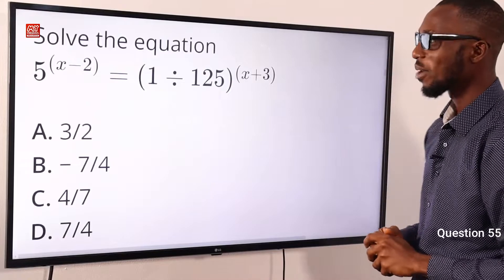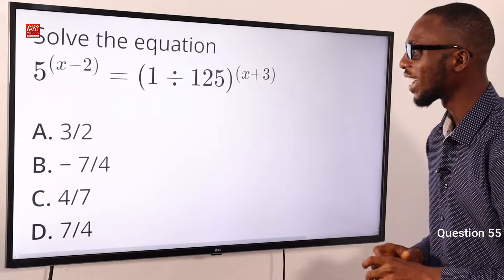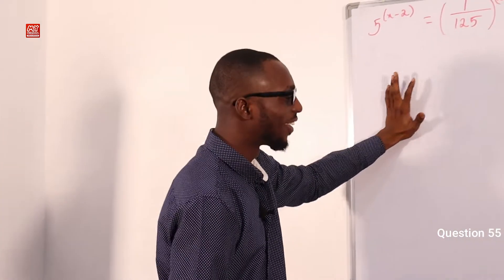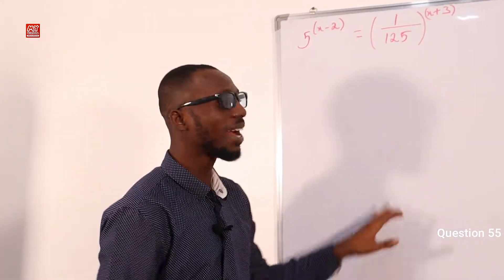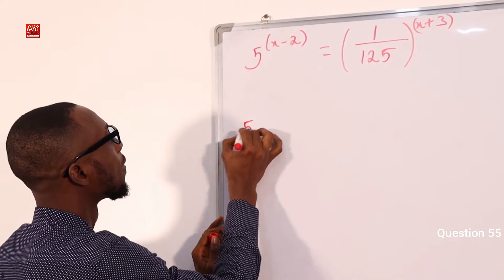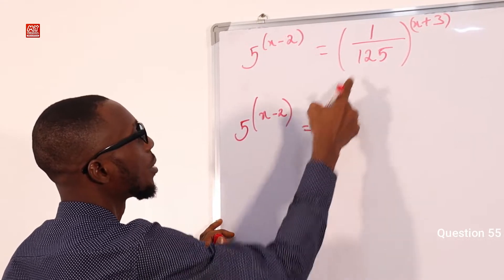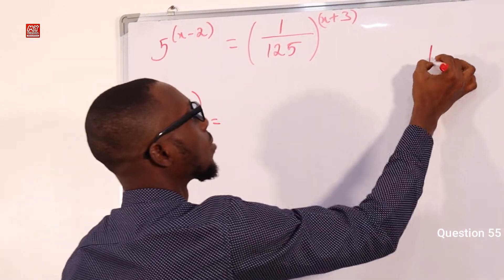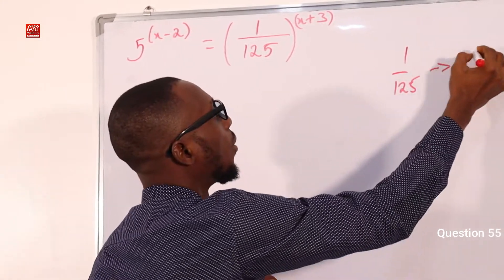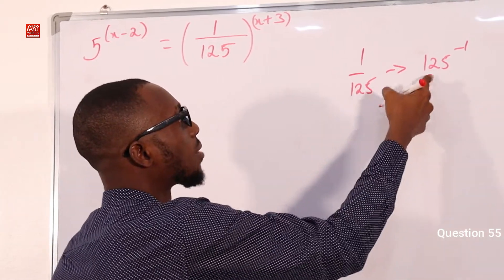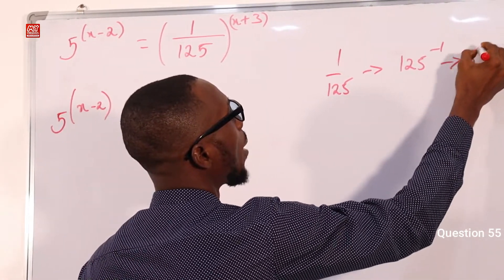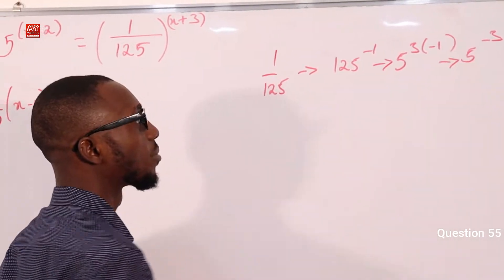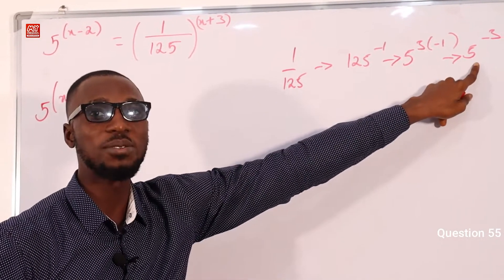Question 55. Solve the equation: 5 raised to the power (x minus 2) equals 1 divided by 5 raised to the power (x plus 3). We present the question on our solution platform. 1 over 5^(x+3) means 5^(x+3) raised to the power minus 1. And 5^(x+3) to the power minus 1 equals 5 raised to the power minus 3 times (x plus 3), which is 5 raised to the power minus 3x minus 9.